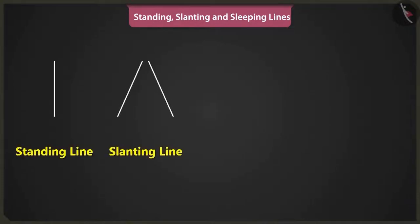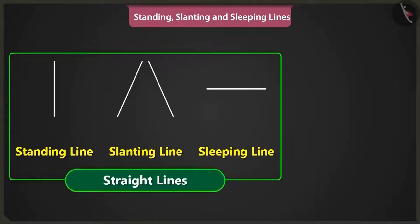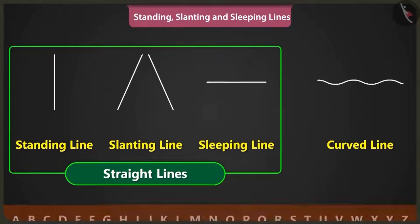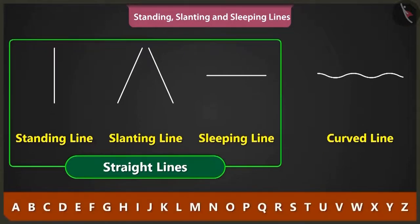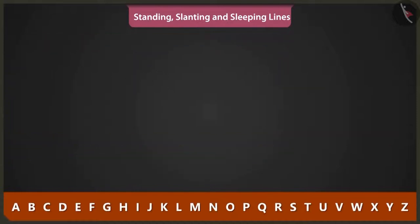Now you can easily draw pictures using straight lines like standing lines, slanting lines, sleeping lines and also with curved lines. Apart from drawing pictures, we can also use these lines to write A, B, C, D. Yes, Bittu.